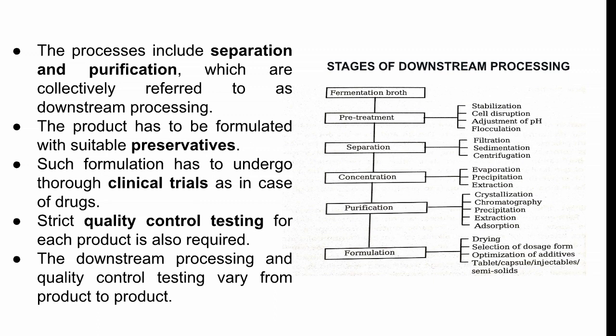To give a brief idea about the stages of downstream processing: I have fermentation growth, which goes into pretreatment — like stabilization, cell disruption, adjustment of pH, and flocculation. All these processes are there for pretreatment. They are being separated out, so I am getting the separated product. After separation, where each and every product is separated from the debris, I can use filtration, sedimentation, or centrifugation. So the debris is being separated out.